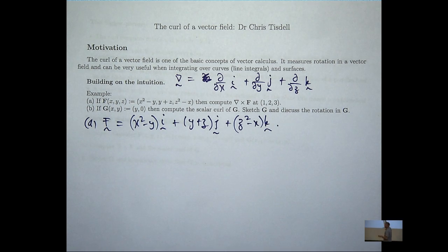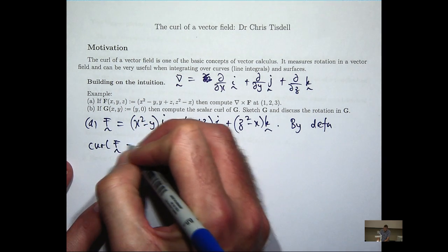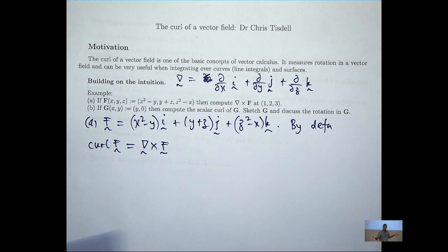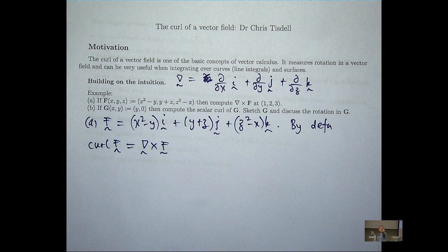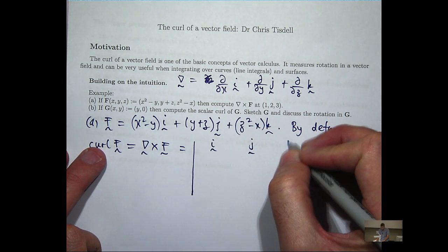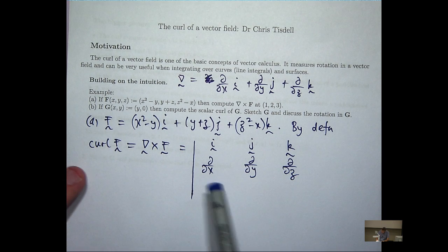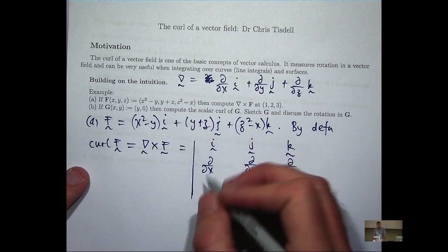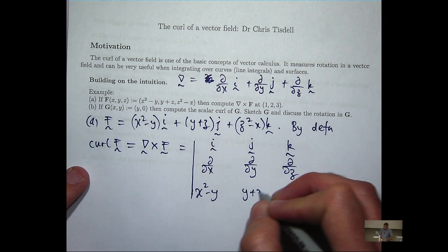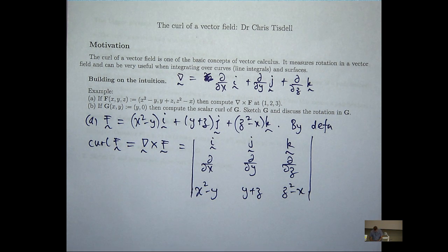The curl is defined by the following. Loosely speaking, it's the cross product of the del operator with your vector field. So let's write that down and expand it in terms of a 3 by 3 determinant. The components of f will go here: x squared minus y, y plus z, and z squared minus x.